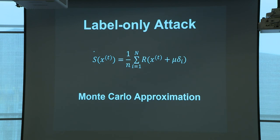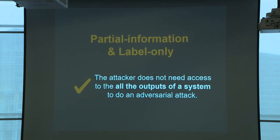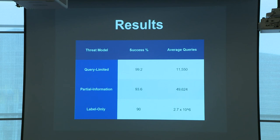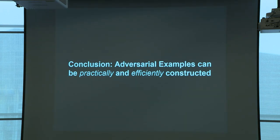In practice we do this with a Monte Carlo approximation — taking many samples of the image plus some noise. We showed that in both the partial information and the label-only case, which are increasingly realistic threat models, the attacker does not need access to all the outputs of the system to perform adversarial attacks. The conclusion: adversarial examples can be practically and efficiently constructed in these real-world settings.